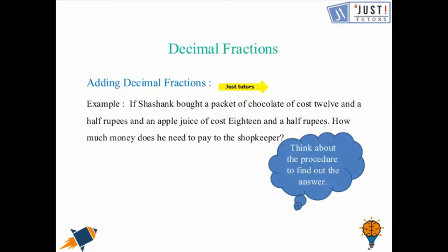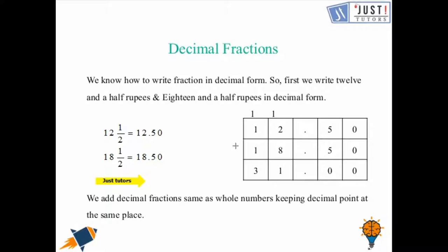After writing fractions as decimals, now we have how to add decimal fractions. Let's take an example. If Shashank bought a packet of chocolate of cost 12.5 rupees and an apple juice of cost 18.5 rupees, how much money does he need to pay to the shopkeeper? When we say adding fractions that's a little bit harder, so we can write these fractions in decimal forms and then can add them. As discussed, 12 and a half is 12.50, 18 and a half is 18.50. We can add both the numbers together in similar way we were adding whole numbers. We just need to keep one thing in our mind that we need to line up the decimal point at the same place. 12.50 and 18.50 will give us 31, which means that he needs to pay 31 rupees to the shopkeeper.